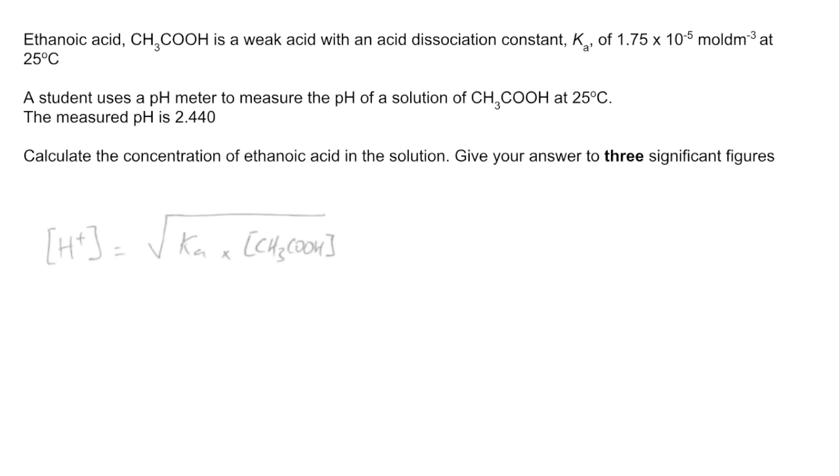The first place we'll start is the formula for the H plus concentration for a weak acid. That's the square root of Ka multiplied by the concentration of the weak acid, ethanoic acid in this case. We need to find out this concentration here, so we need to rearrange this equation. It's the concentration of the H plus ion squared all over the Ka.